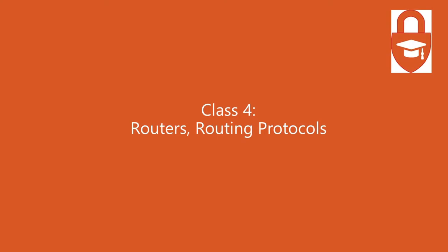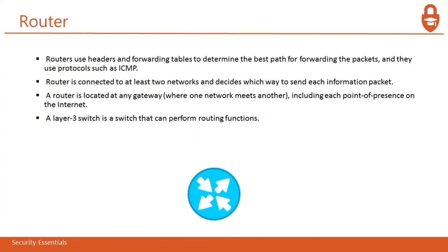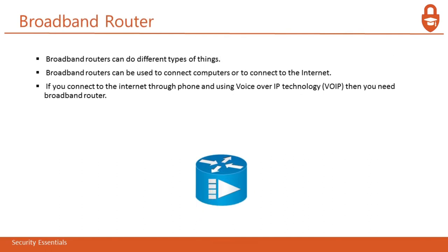Now we have routers and routing protocols. Routers use headers and forwarding tables to determine the best path for forwarding packets, and they use protocols such as ICMP. A router is connected to at least two networks and decides which way to send each information packet. A router is located at any gateway, where one network meets another. A Layer 3 switch is a switch that can perform routing functions. A broadband router can connect computers to the internet. If you connect to the internet through the phone and use voice over IP technology, you need a broadband router.